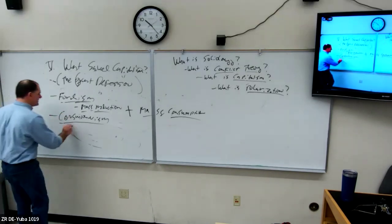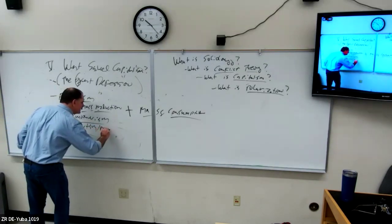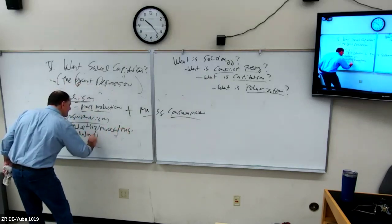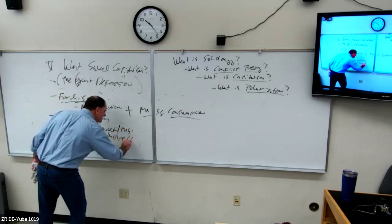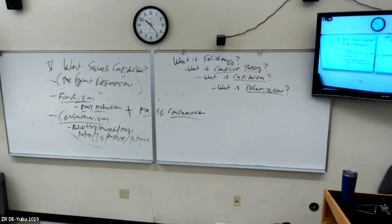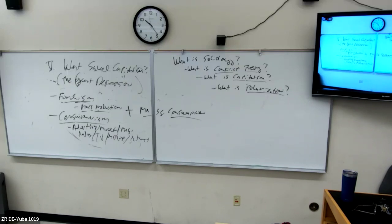We've been trained to want things through advertising and marketing — magazines, radio, TV, movies, the internet. All of these are used to stimulate our demand, to get us to want what capitalism is creating. These are called false needs: we feel we really need the thing, but we really don't. The movies and TV shows that are supposed to be entertainment are also being used to get you to want to buy stuff.